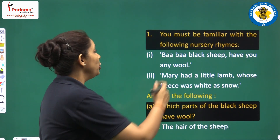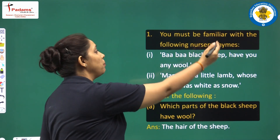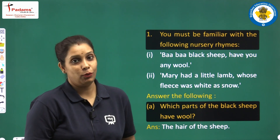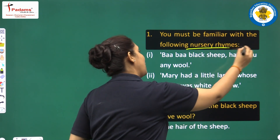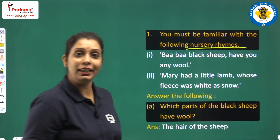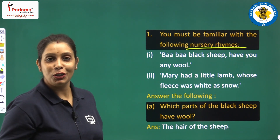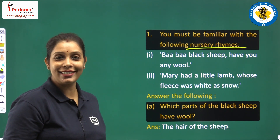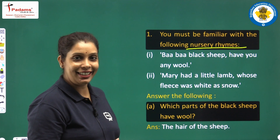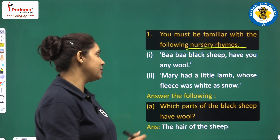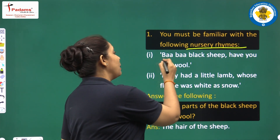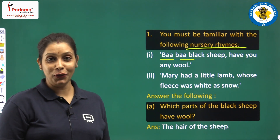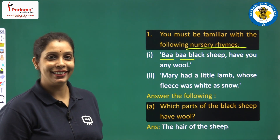The first question: you must be familiar with the following nursery rhymes. First one is 'Baa baa black sheep, have you any wool?' You remember this?